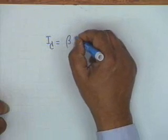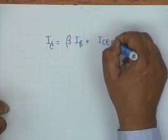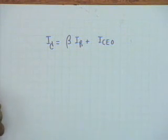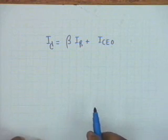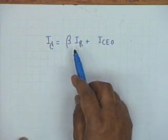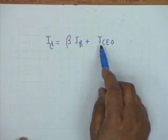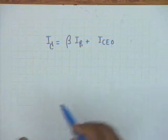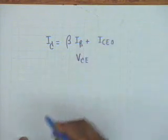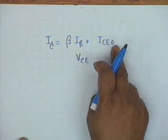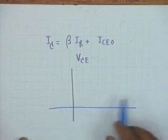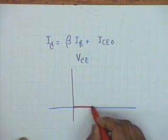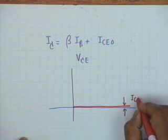The characteristics now become: I_C = β·I_B + ICEO, where ICEO ≈ (β+1)·ICBO. Notice that if the input current is zero — that is, the base is open — then I_C consists only of the small component ICEO, which is independent of VCE. If we plot the characteristics, the curve for I_B = 0 is a horizontal line at current ICEO.